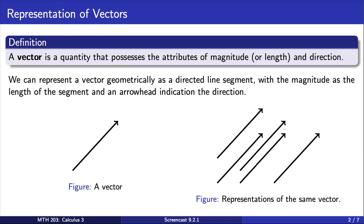For example, these vectors all have the same magnitude and direction. Therefore, the directed line segments all represent the same vector. This means the same vector can be drawn in the plane in many different ways.